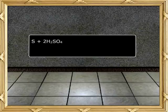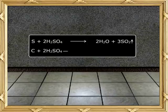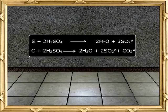S plus 2H2SO4 will give you 2H2O plus 3SO2. C plus 2H2SO4 will give you 2H2O plus 2SO2 plus CO2.